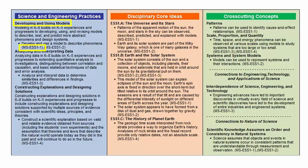Next, looking at the disciplinary core ideas box, we can see that our code is located in two locations. However, upon reading what each section says, we can eliminate one. The section on the universe and its stars says patterns of the apparent motion of the sun, the moon, and the stars in the sky can be observed, described, predicted, and explained with models. The section on Earth in the solar system reads that Earth's spin axis is fixed in direction over the short term but tilted relative to its orbit around the sun, and the seasons are a result of that tilt, caused by the differential intensity of sunlight on different areas of the Earth across the year. The universe and its stars section does not apply to our concept of seasons, but the Earth and solar system section does have the correct content.